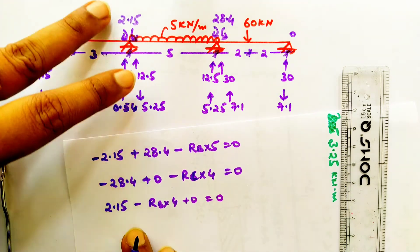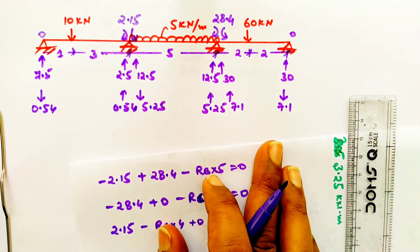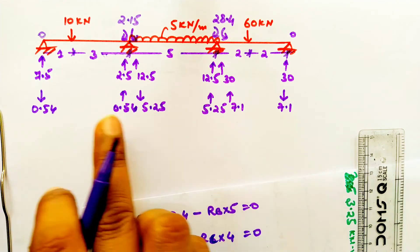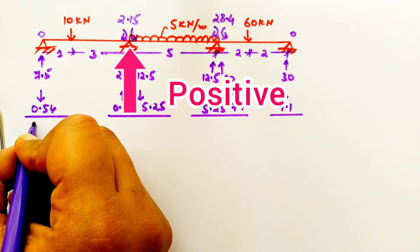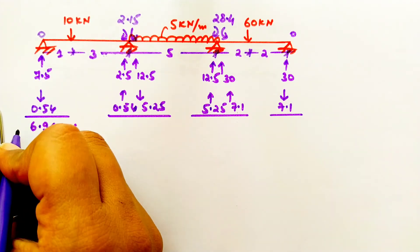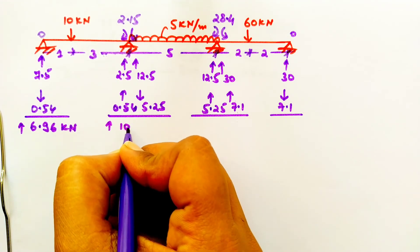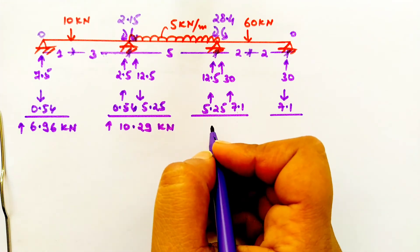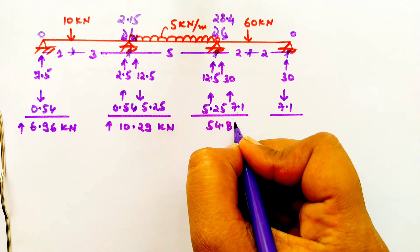This is how we generate reactions from the moments. At B support there are four reaction contributions — we sum all reactions with their signs (upward positive, downward negative) to get the final reactions at each support.